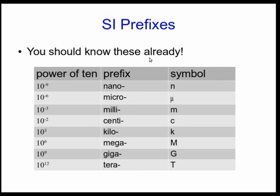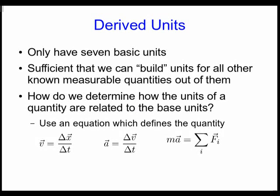You should already know these SI prefixes—these are the most commonly used ones. If you don't know them, learn them. So we only have seven basic units, but they're enough. There are a lot more than seven types of things that can be measured, but these seven basic units are enough to build the units for all the other known measurable quantities. Maybe someday we'll find some other basic units that we need, but at the moment we know seven.